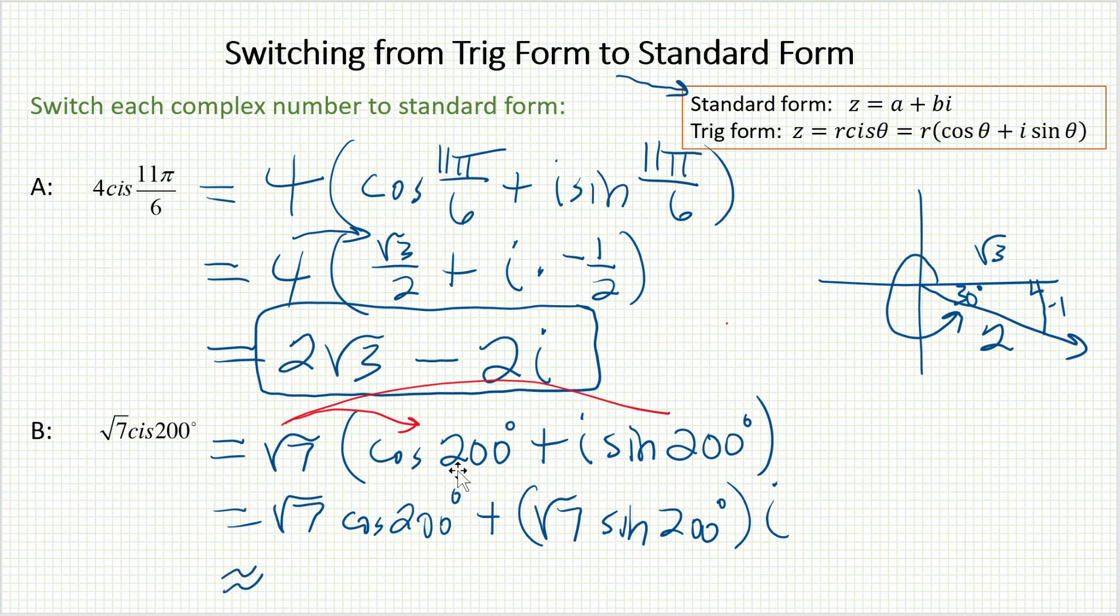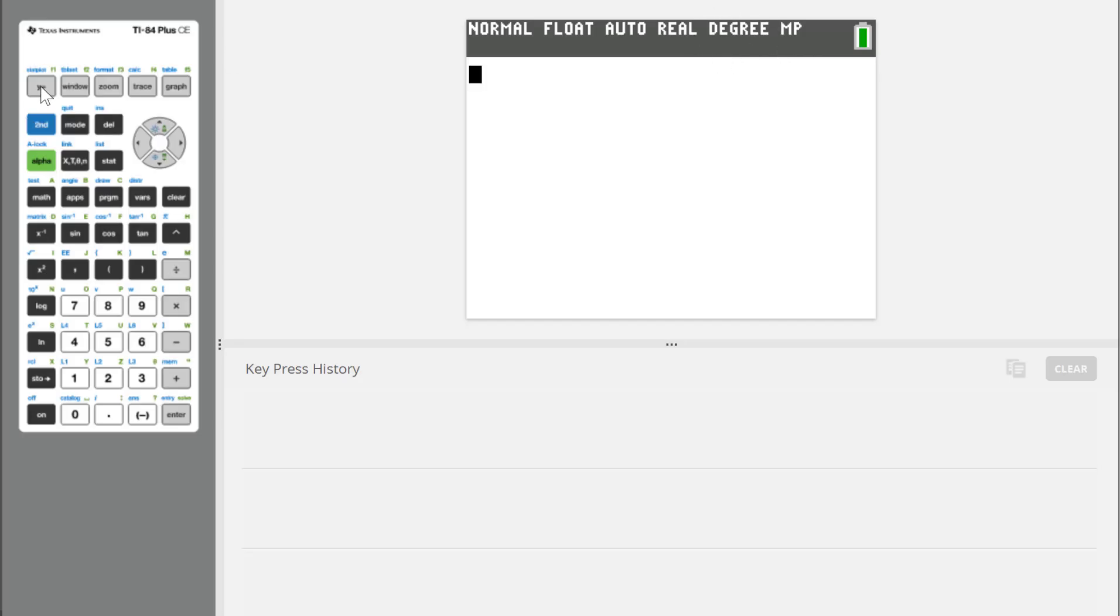We'll obtain those values right off the TI. I am in degree mode. I need to do √7. Make sure you exit out of that. Times cosine 200.